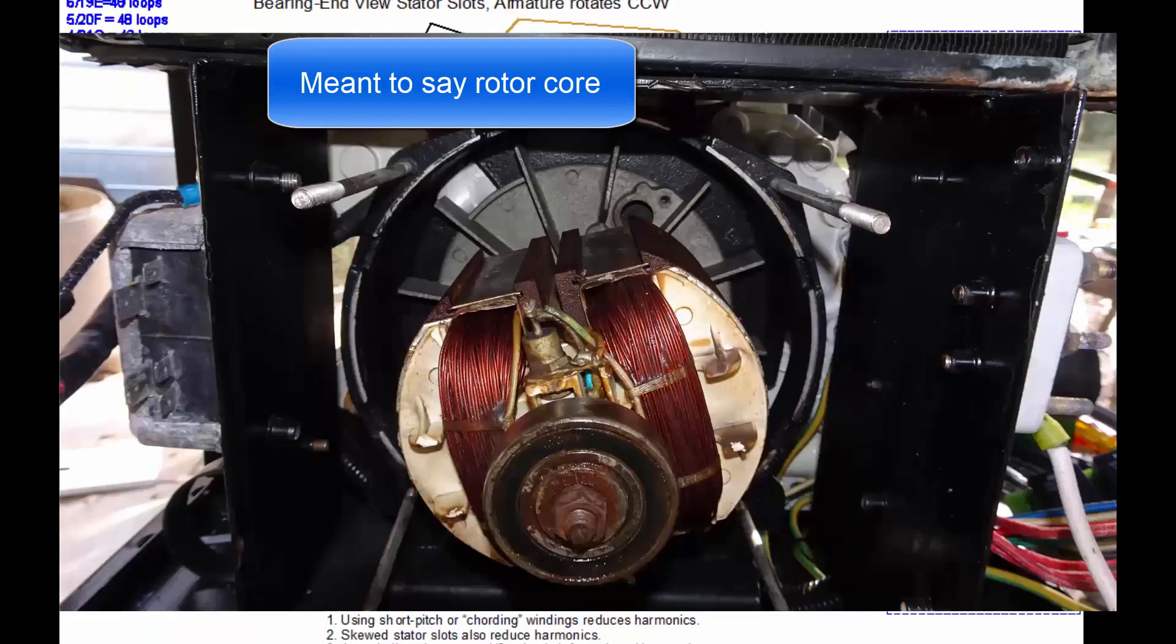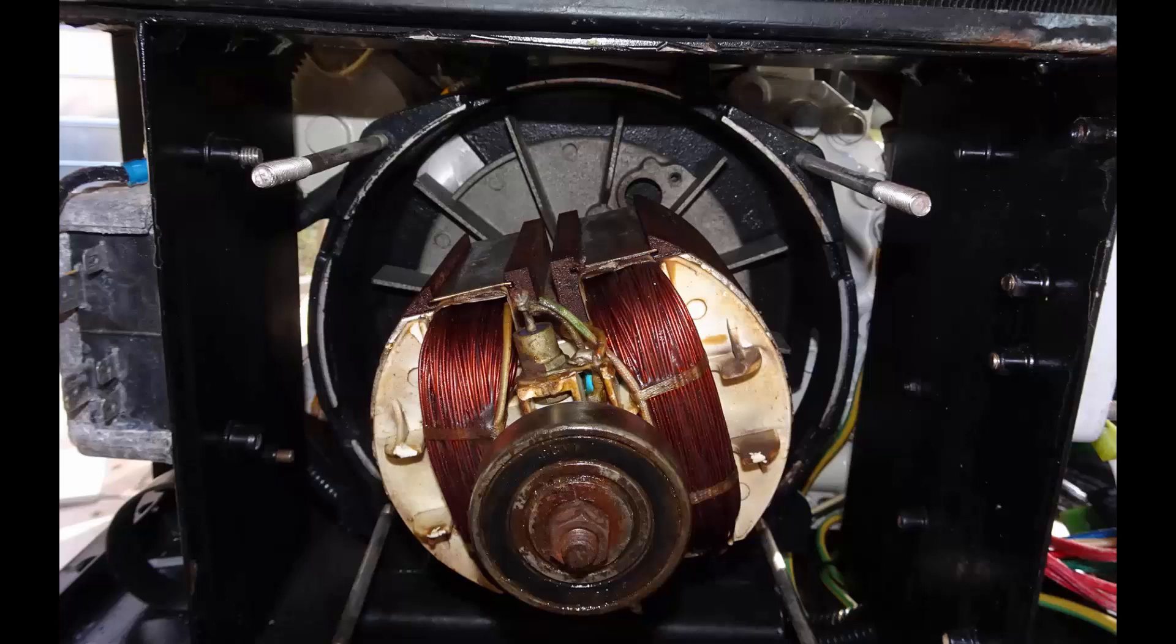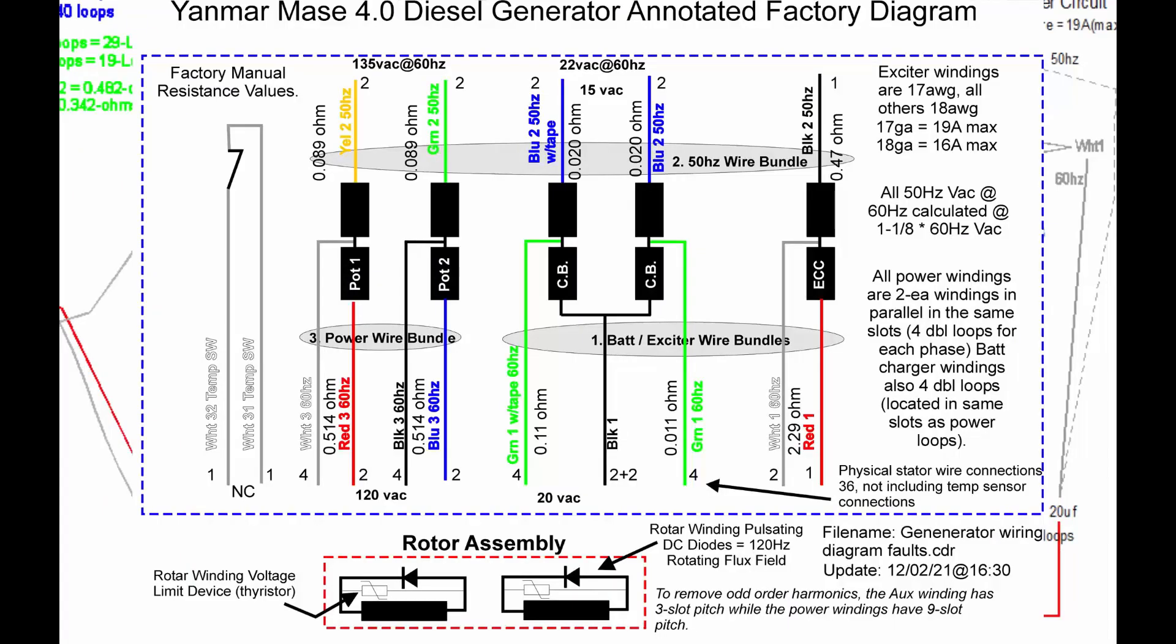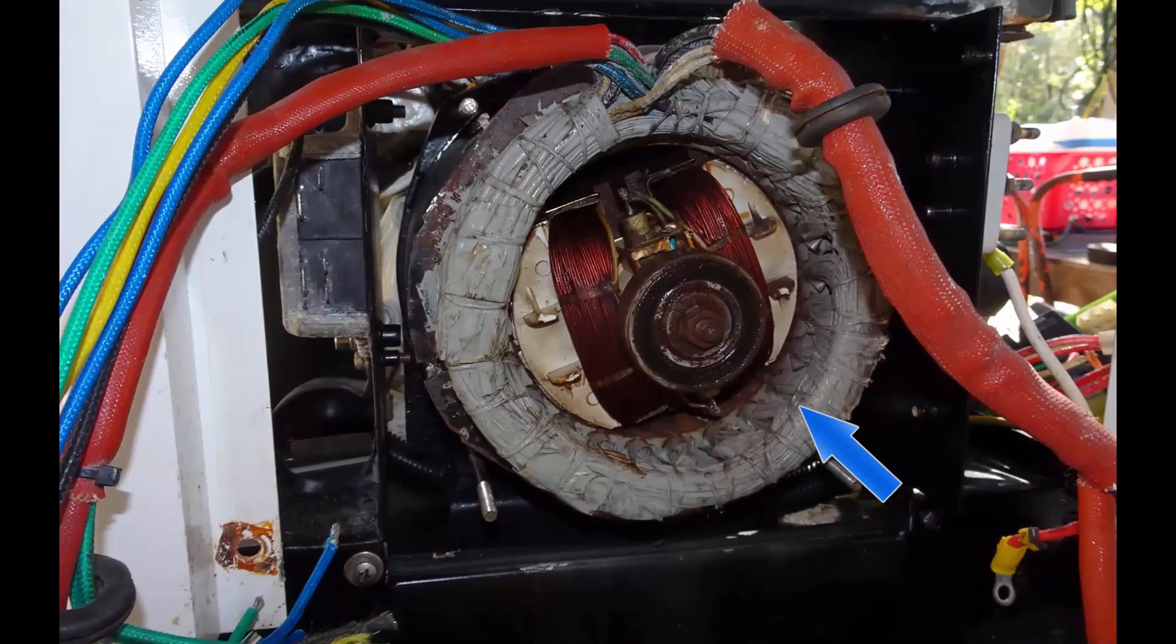The rotor assembly is also unique in this alternator. It's a two-pole rotor, there's a winding on each pole, and there's a diode across each winding. So as the armature, which these windings are mounted to, as it rotates, it senses the residual magnetism in the stator metal assembly.